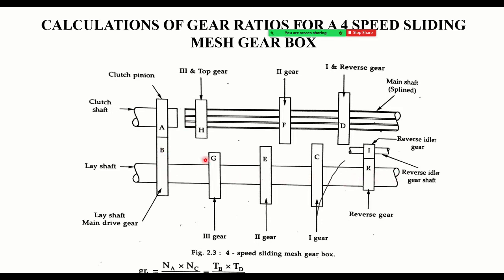The gears on the lay shaft are fixed — they do not slide. The gears on the main shaft are the ones that can slide. So these sliding gears on the main shaft are used to engage different gear ratios.